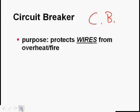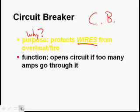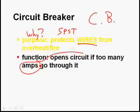Circuit breaker — sometimes abbreviated CB, and that's not the same as citizens band radio. Why do we have it on the aircraft? It's there to protect wires. A common misconception is that circuit breakers are there to protect the component — they're not. The size of circuit breakers is determined by the size of the wire, because they're there to protect the wire from getting too hot, melting insulation, causing wires to touch, or catching fire. It opens the circuit if too many amps go through it — essentially a single-pole single-throw switch operated by excess current.